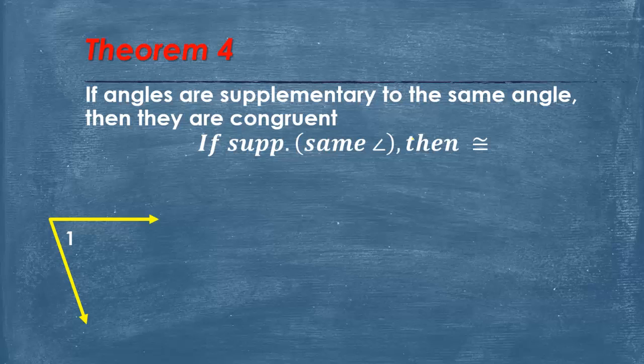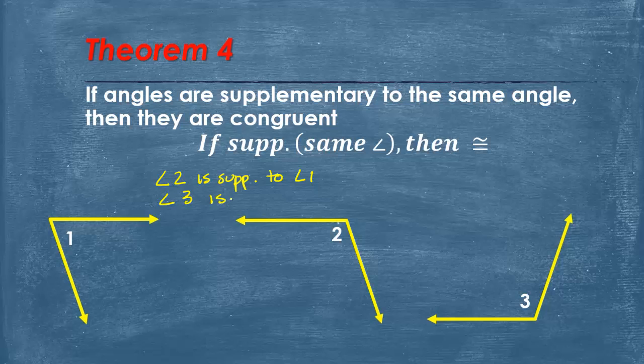So basically, what we have is, say we have angle 1, and we can say angle 2 is supplementary to angle 1. And then we say angle 3 is supplementary to angle 1. Our conclusion would be angle 2 is congruent to angle 3 because of this. Does that make sense?